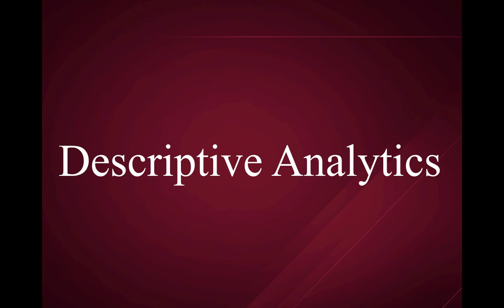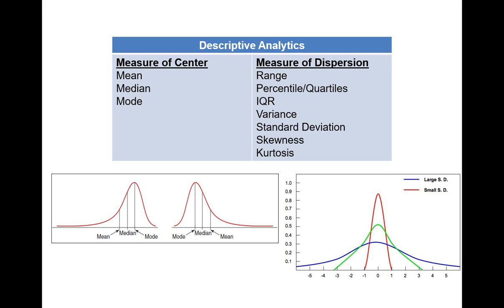In this video we are going to talk about descriptive analytics. There is a measure of center in the data and a measure of dispersion. Measure of center basically tells us where the data is — if somebody tells us what would be your estimation or expectation, we usually talk about the mean, median, and mode.